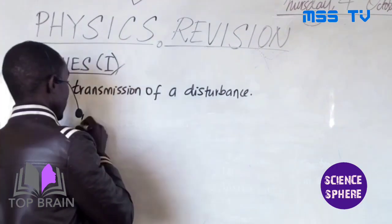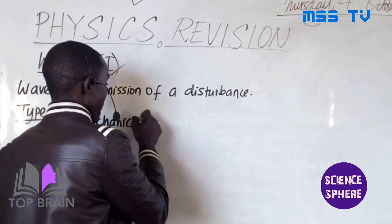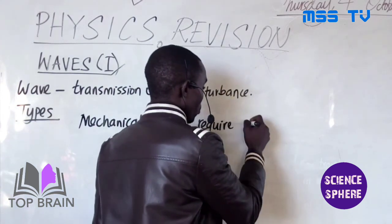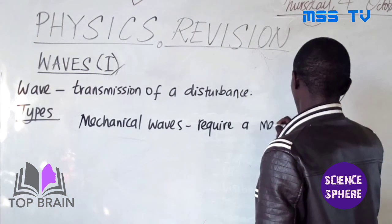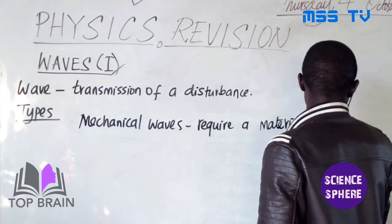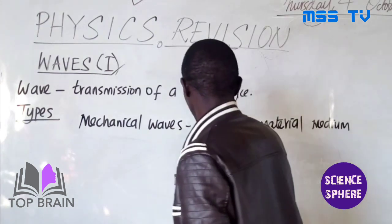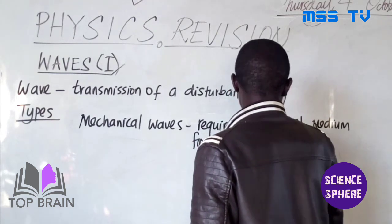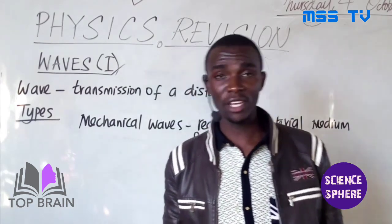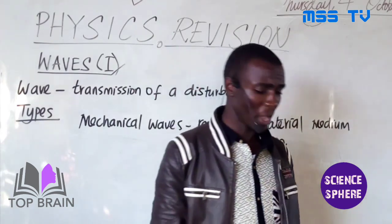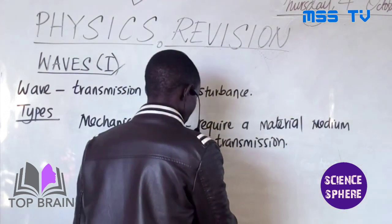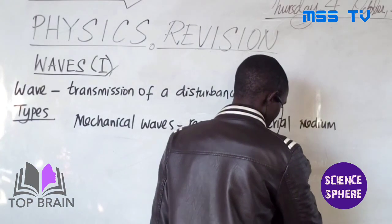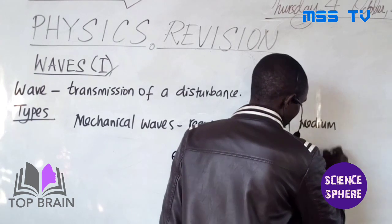Mechanical waves, on the other hand, require a material medium for transmission. That means, in simple language, they cannot travel in vacuum. Examples include sound and water waves.